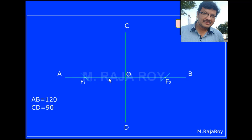Now mark some points in between F1 and O — let's say 3 points, marked as 1, 2, 3, as shown.